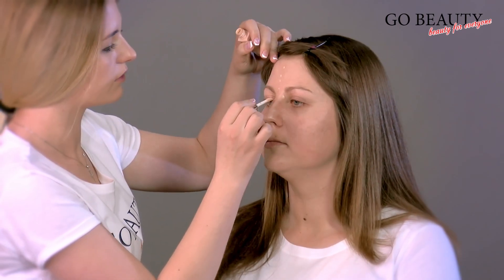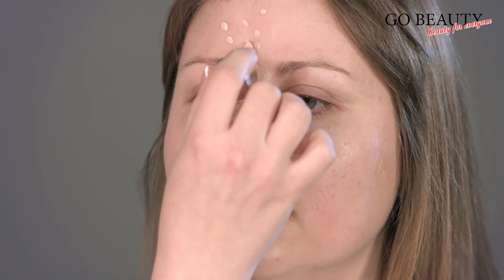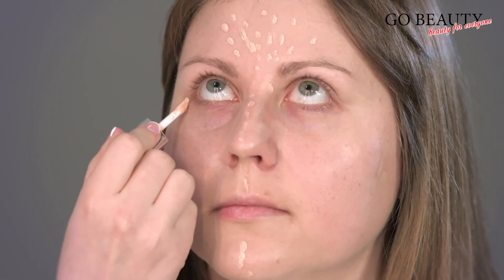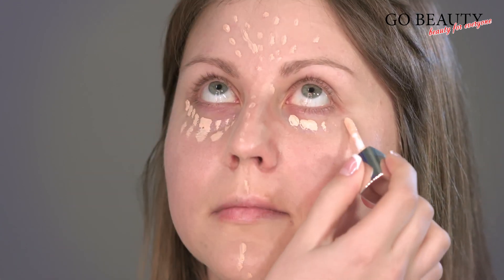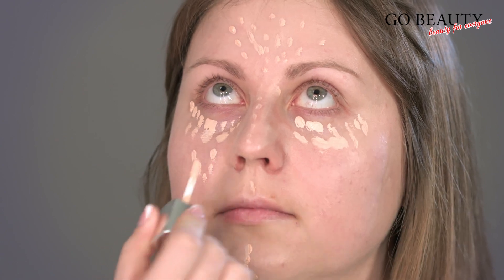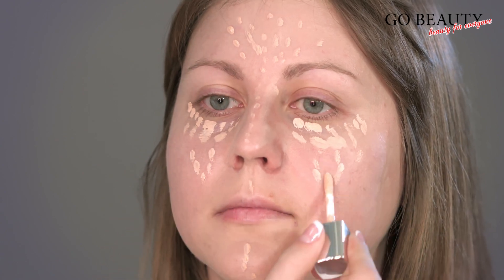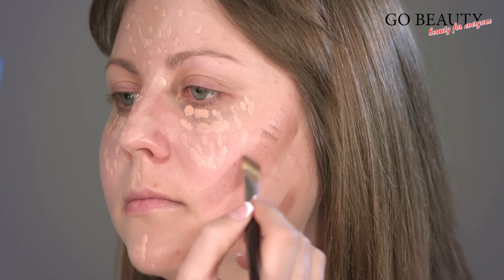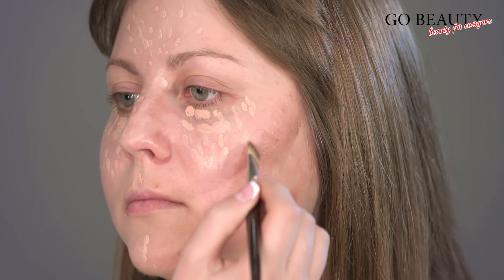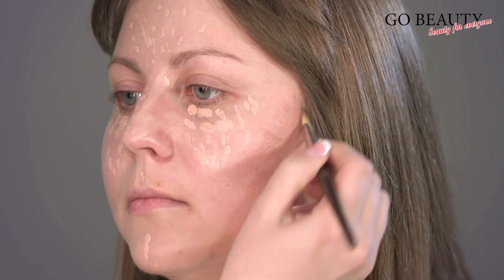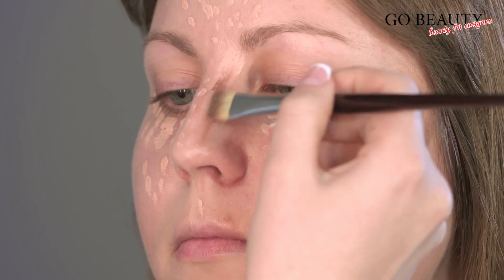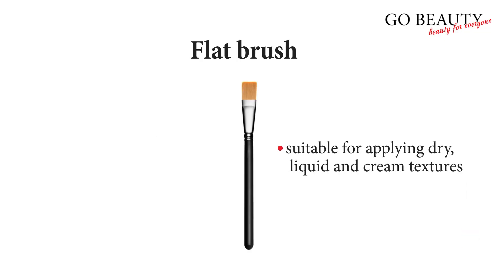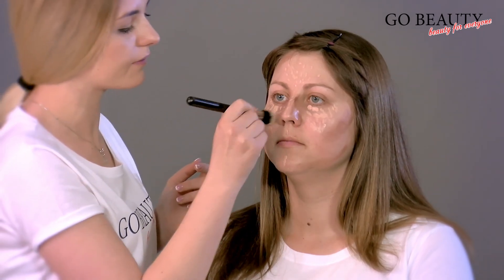As mentioned earlier, our model has a round face shape. To visually bring it closer to an oval, we darken the side parts and lighten the center. Then blend well with shading.